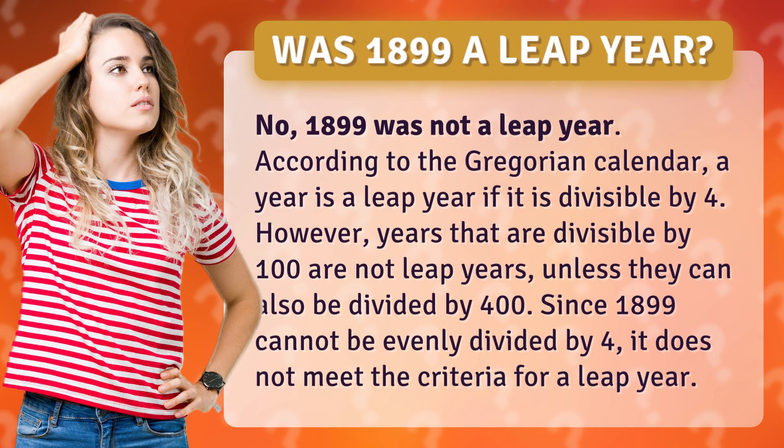According to the Gregorian calendar, a year is a leap year if it is divisible by four. However, years that are divisible by 100 are not leap years, unless they can also be divided by 400. Since 1899 cannot be evenly divided by four, it does not meet the criteria for a leap year.